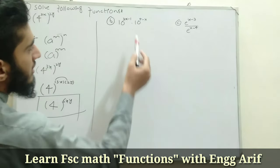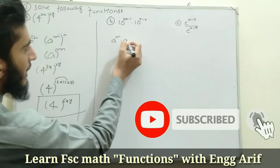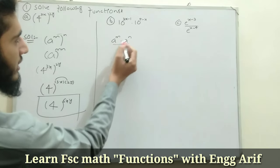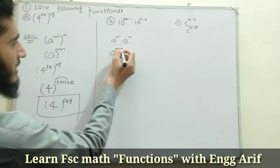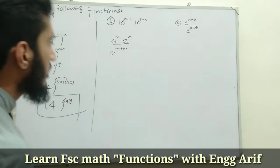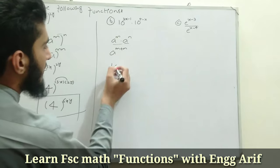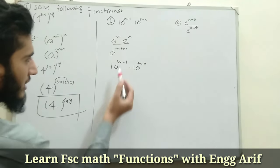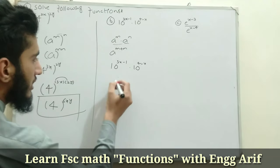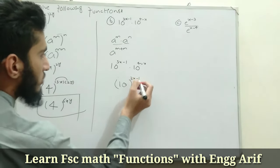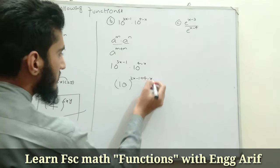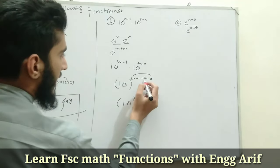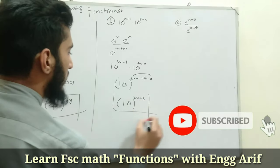For part b, we use the law: when the bases are the same — say a^m · a^n — the powers are added to give a^(m+n). Here both bases are 10, so we have 10^(3x-1) · 10^(4-x). Adding the powers: (3x - 1) + (4 - x). Combining like terms: 3x - x = 2x, and 4 - 1 = 3. The result is 10^(2x+3).